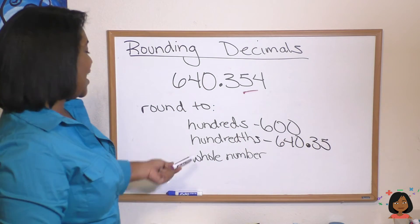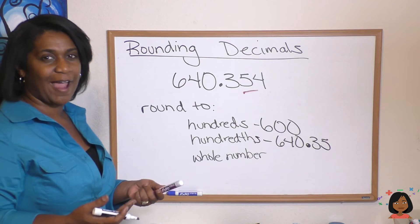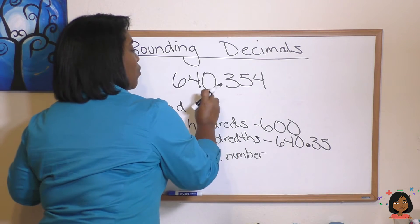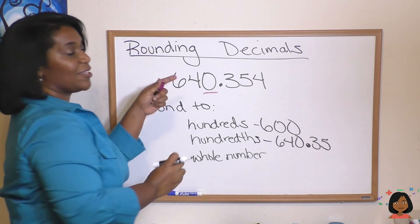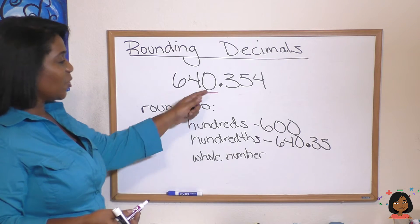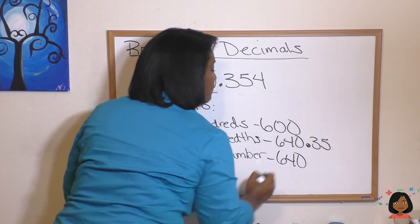One last one. If I said let's round this to the whole number, that means we want to drop our fraction piece. So we're going to highlight our zero, because that's in the ones place. And look to the right. We see it's a 3. We know a 3 is less than 5. So we get to keep our zero. We're going to round this to the whole number, 640.